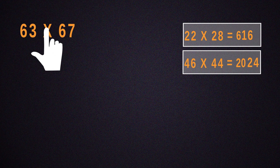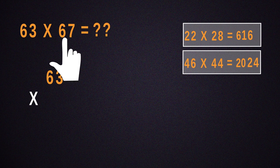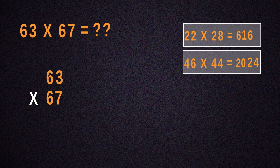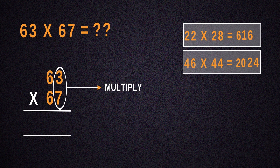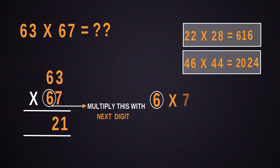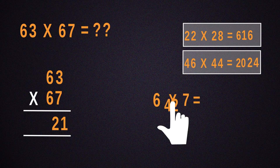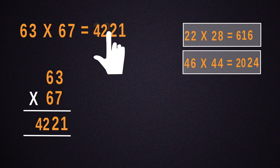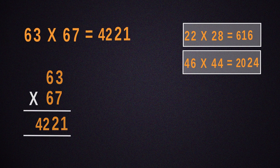Again, let us figure out how to multiply 63 by 67. For that, the number obtained by multiplying 3 by 7 will be 21 and should be put down. Then, multiply 6 with its next number, which is 7. Place the result next to 21 and we get 4,221.